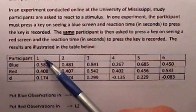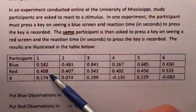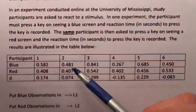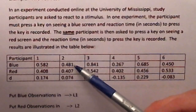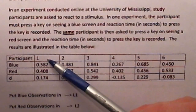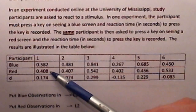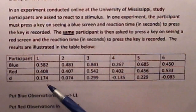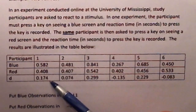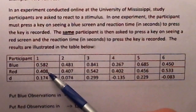Participant number one required 0.582 seconds to respond to seeing a blue screen, and that same participant responded to seeing a red screen in 0.408 seconds. Respondents two through six also were subjected to these two different reaction tests. Since each participant is subjected to two different tests, we say that these data values are paired with each other. The reaction times to the blue screen and the reaction time to the red screen are paired observations — that's why we call this a dependent or matched paired data set. The last row represents the difference between the reaction times to the blue screen and the red screen, with the order of subtraction being blue screen minus red screen reaction time.